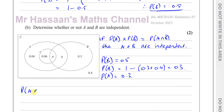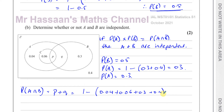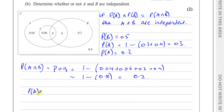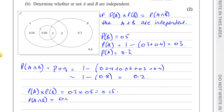Now we need the probability of A intersection B, which is basically P and Q together. We can find it by taking one minus the sum of all other probabilities: one minus 0.04 plus 0.06 plus 0.3 plus 0.4. That gives one minus 0.8, which is 0.2. So the probability of A times the probability of B is 0.3 times 0.5, which is 0.15. And the probability of A intersection B is 0.2. Since 0.15 does not equal 0.2, they are not independent.